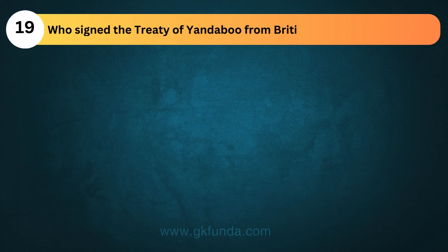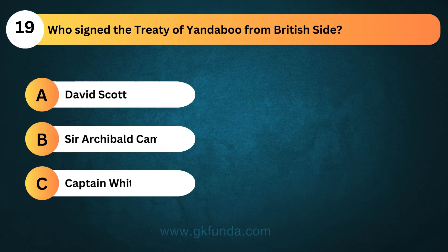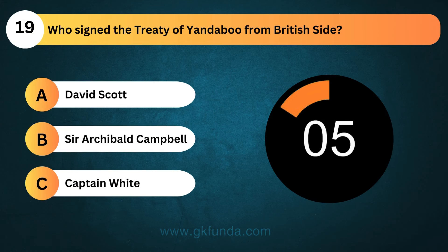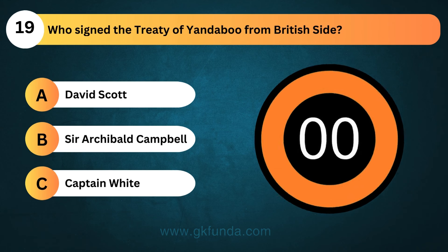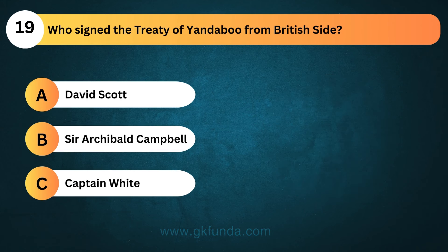Who signed the Treaty of Yandaboo from the British side? The answer is option B, Sir Archibald Campbell, on the 24th of February, 1826.